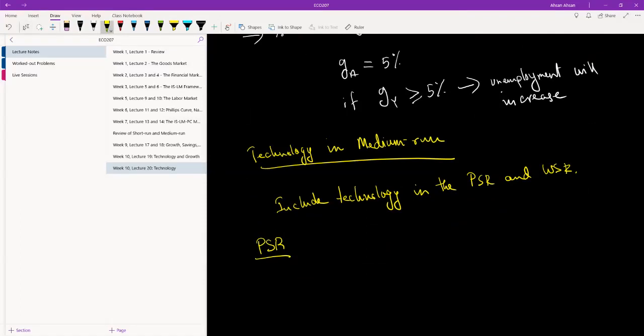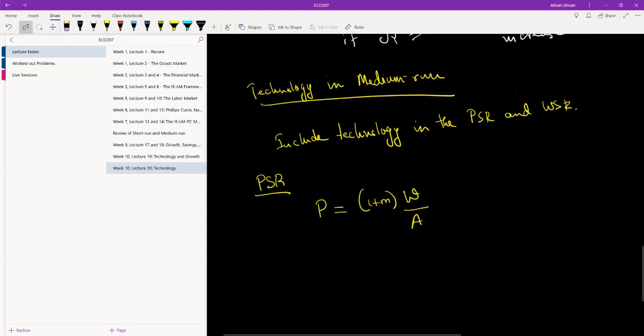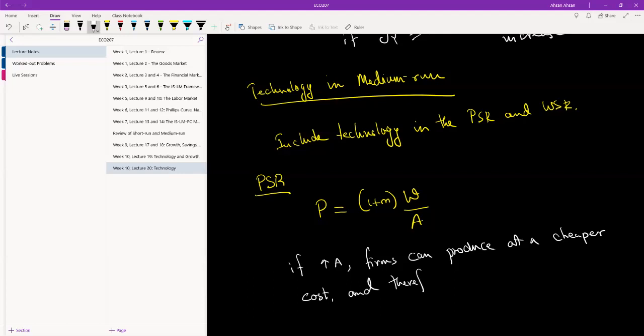What we had was price equals the markup times wage. What we are going to do is divide this by technology. Why are we dividing this? The implications of this is that if there is technological progress, if A goes up, firms can produce at a cheaper cost, therefore charge a lower price.